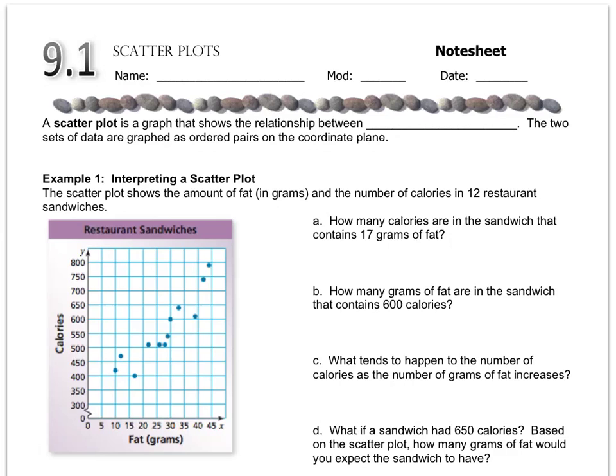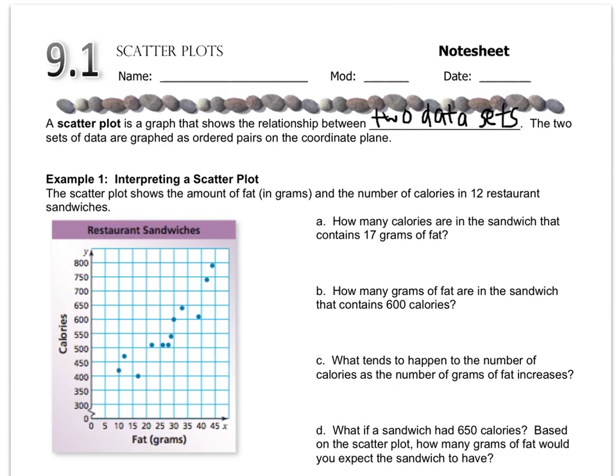The first type of graph that you may or may not have done before is called a scatter plot. A scatter plot is a graph that shows the relationship between two data sets. The two sets of data are graphed as ordered pairs on the coordinate plane. For example, this graph right here is talking about fat and calories and they're plotted. The x coordinate of the point represents fat and the y coordinate represents calories.